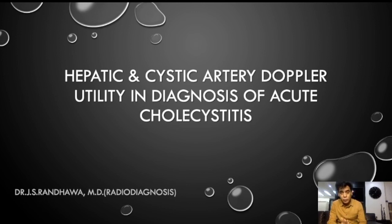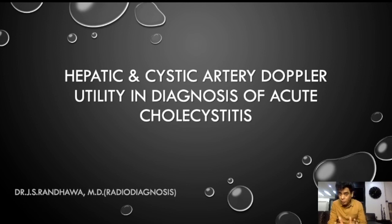We all know the grayscale findings are good enough most of the times. Like in acute cholecystitis we find a tense distended gallbladder and there is irregularity of the walls. However, sometimes when there is confusion, Doppler can be used and that can be helpful.